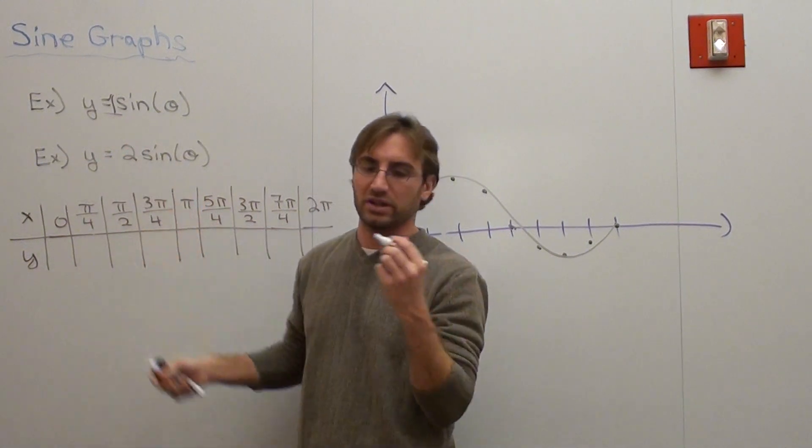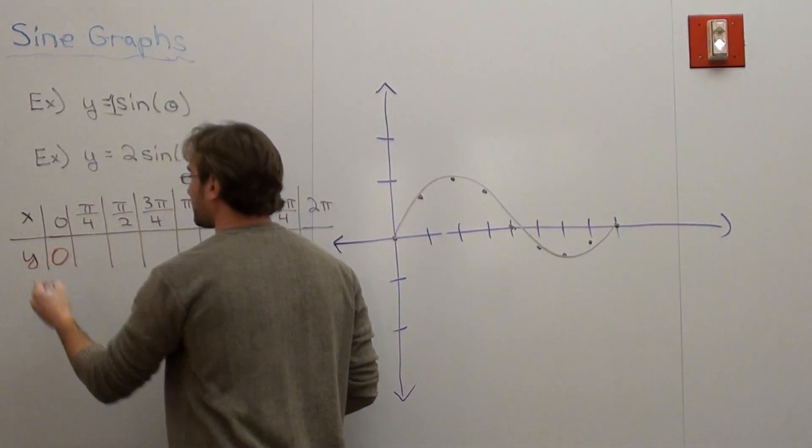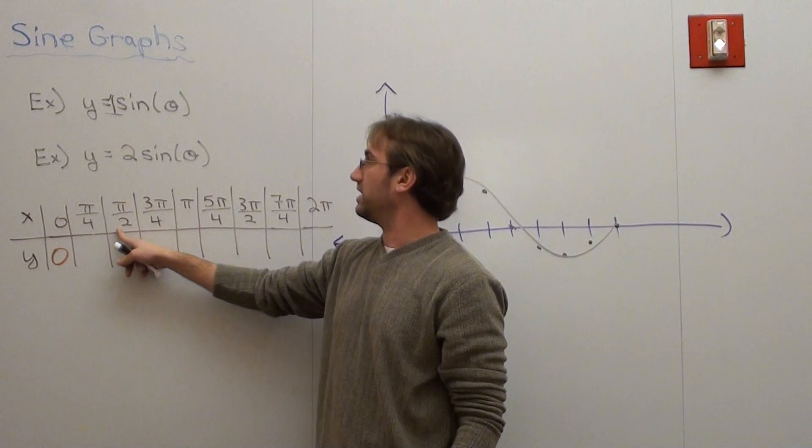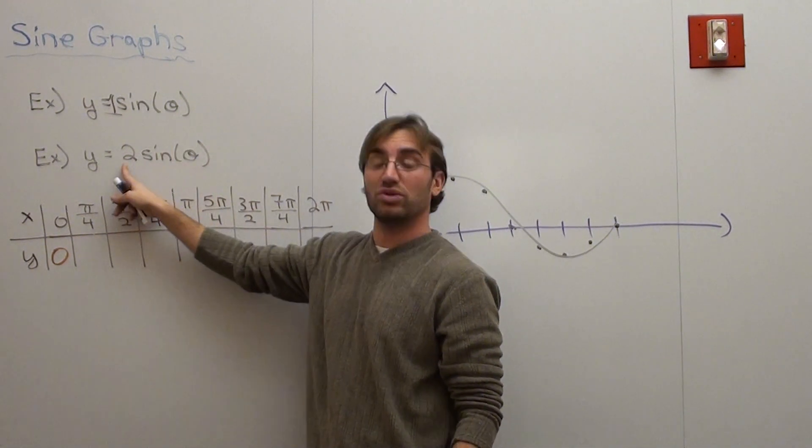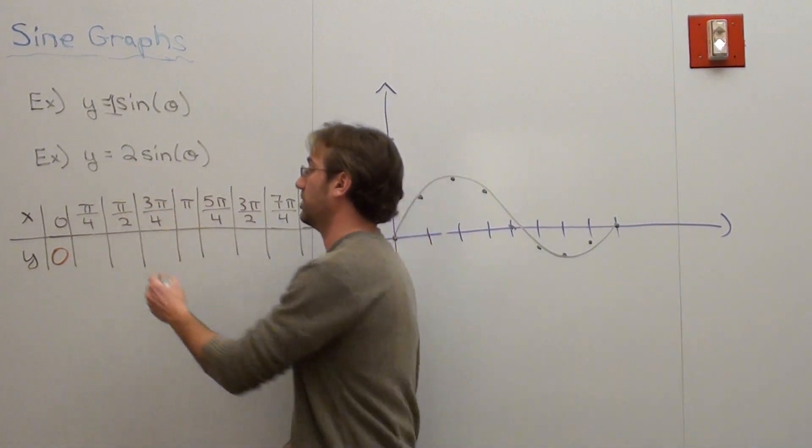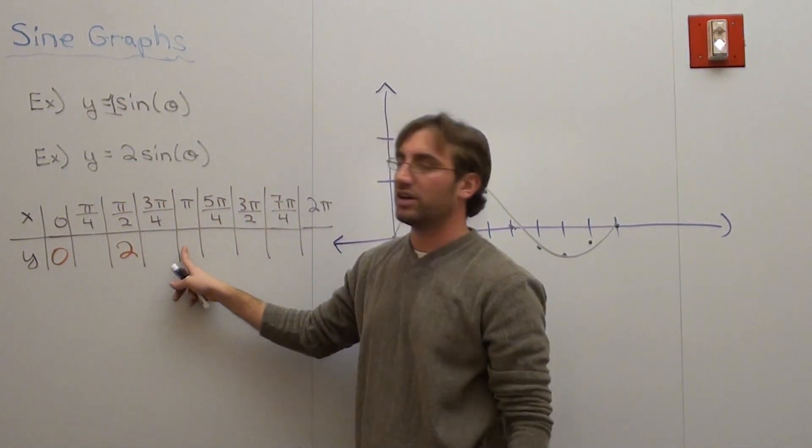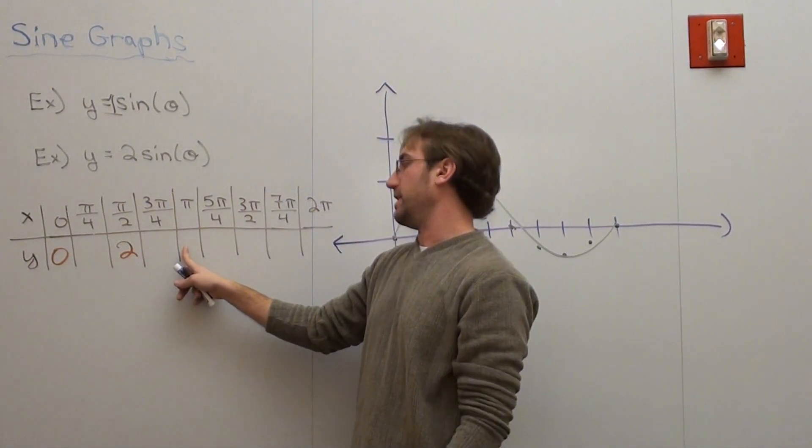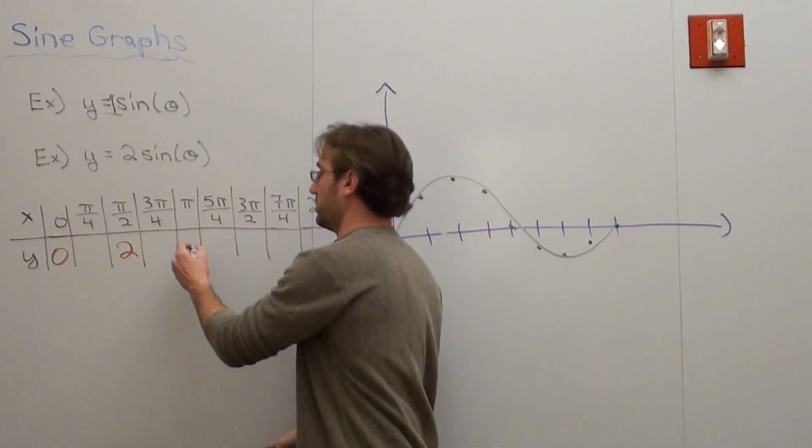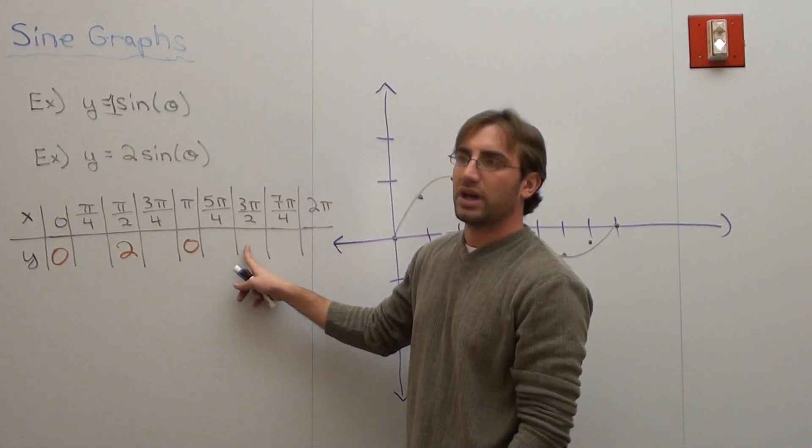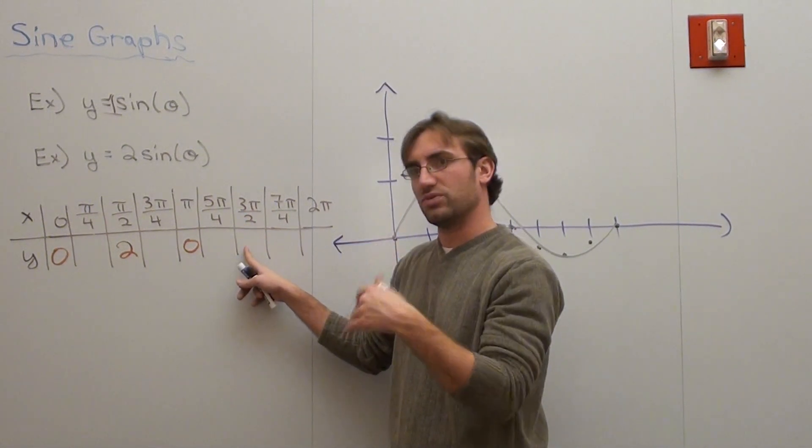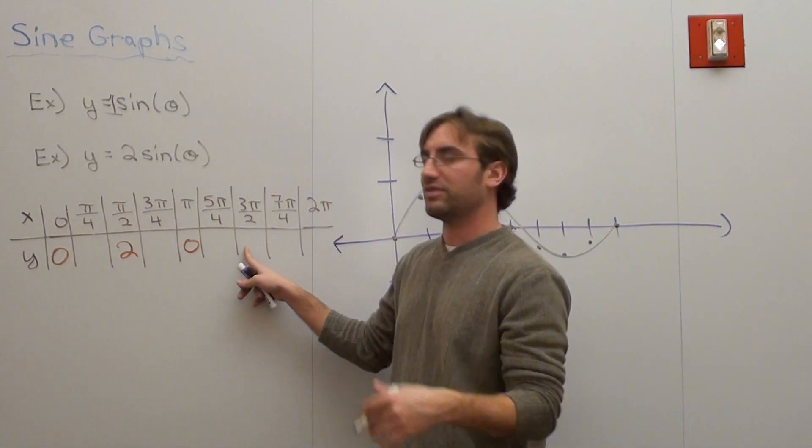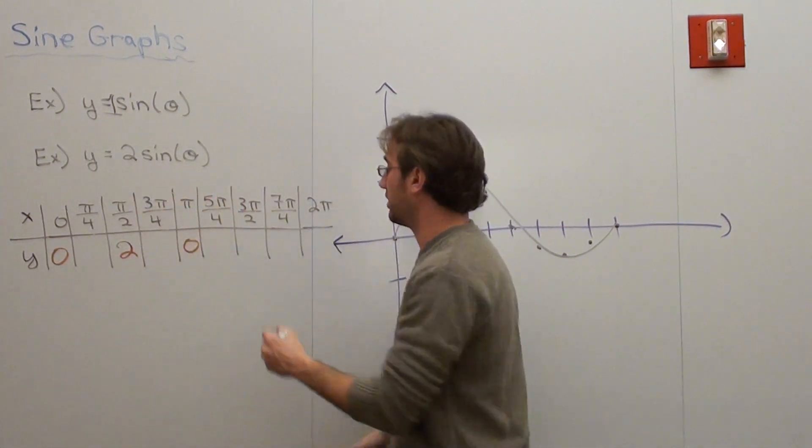0 times 2 is still 0. What's the sine of 90 degrees? The sine of 90 degrees is 1, but if I do it on this function, 1 times 2 is 2. Sine of 180 degrees or pi is 0. 0 times 2 is still 0. Sine of 270 degrees or 3 pi over 2, it's the same exact thing except one's radians, one's degrees, is negative 1, but negative 1 times 2 is negative 2.